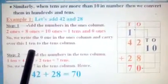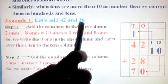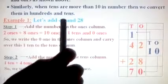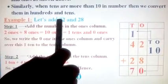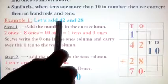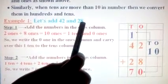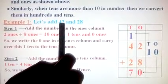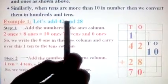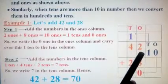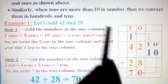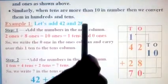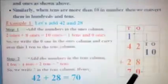Now see the first example. Add 42 and 28. Now, 2 is in ones place and 4 in tens place. Here also you have 8 in ones place and 2 in tens place. So let's write 42 first in the place value. So 2 you are writing in the ones place and 4 in the tens place. The same way you are going to write 8 in the ones place and 2 in the tens place.